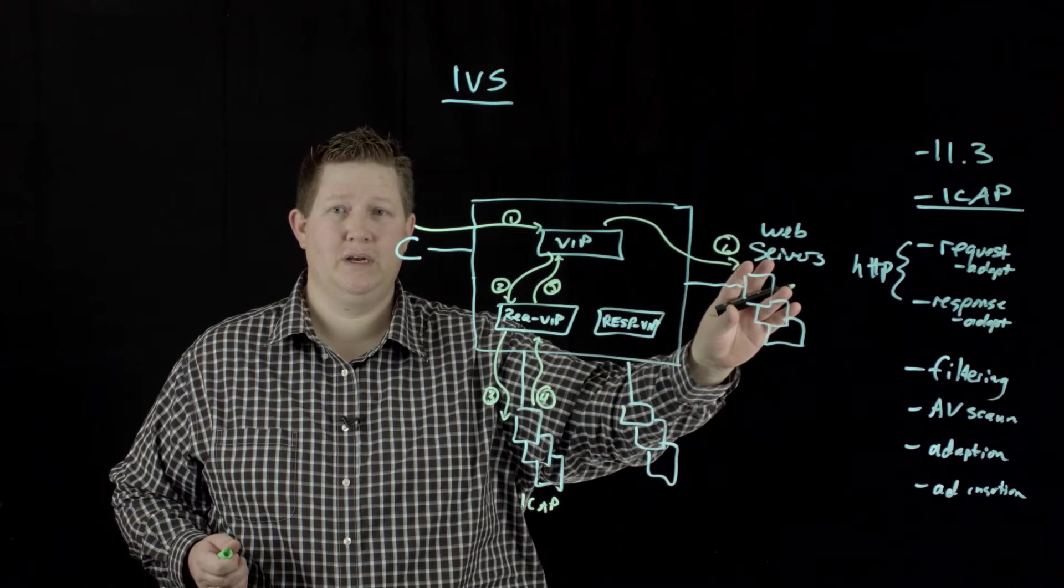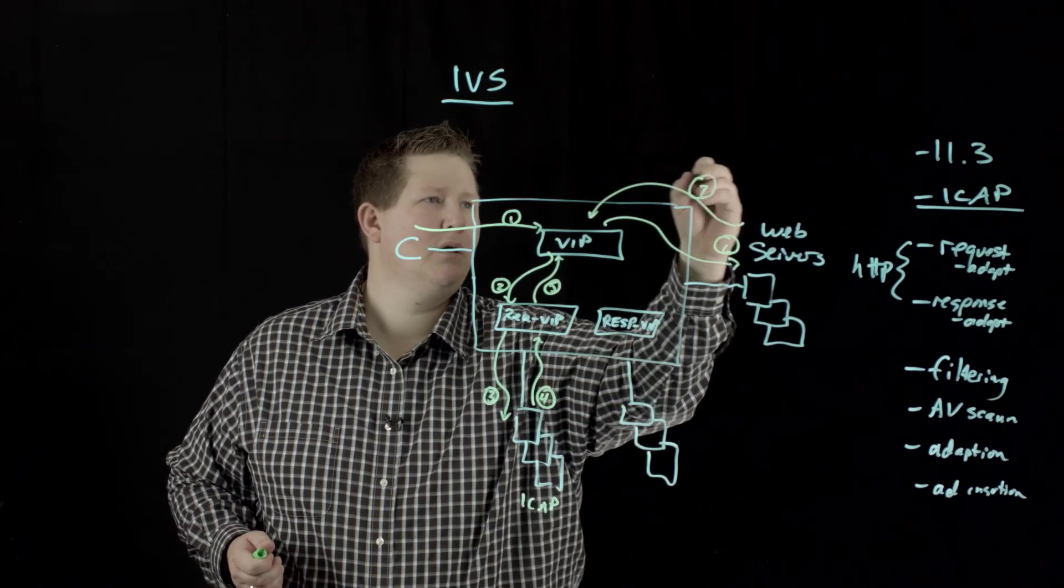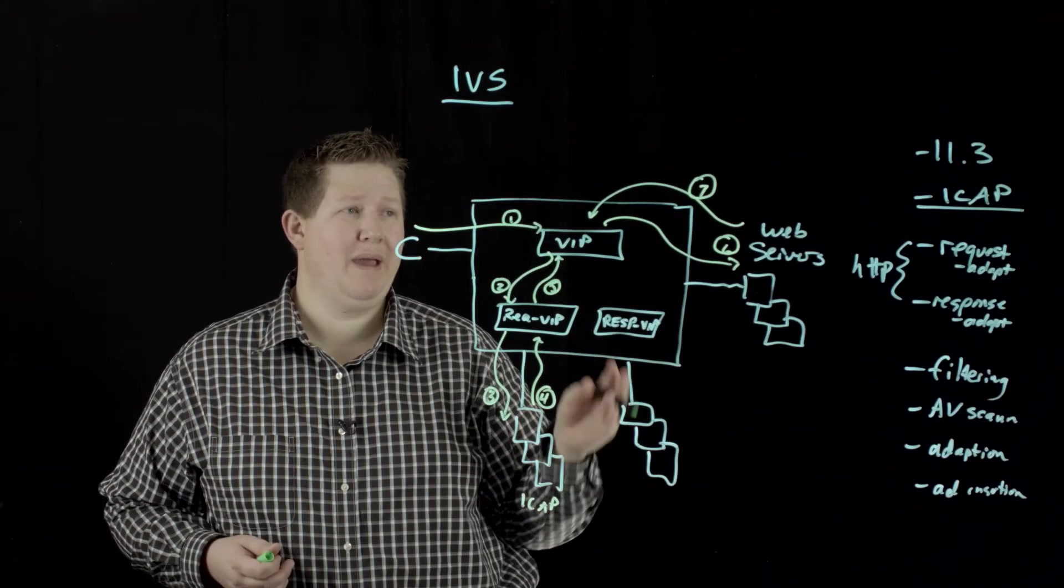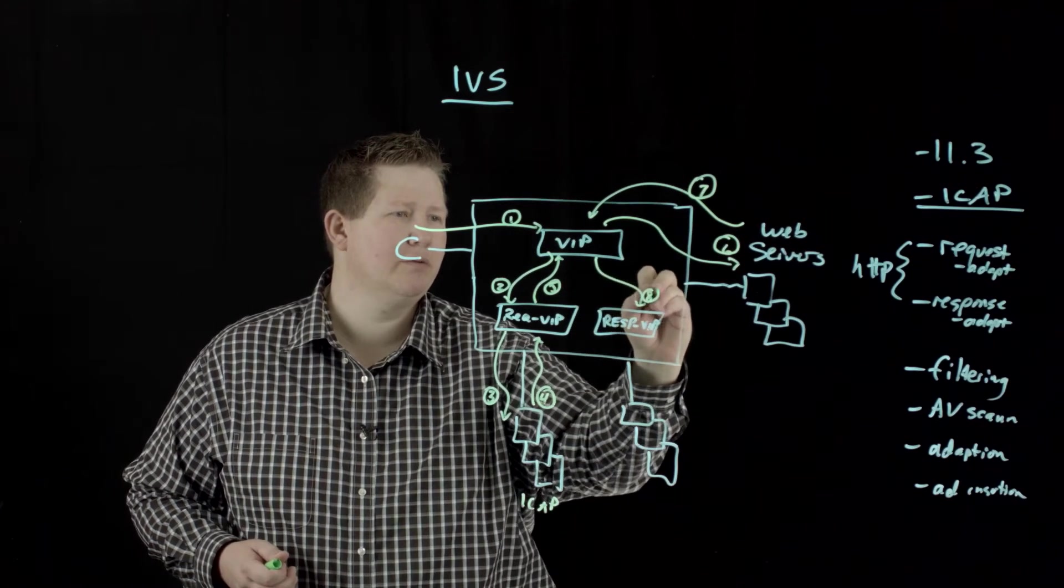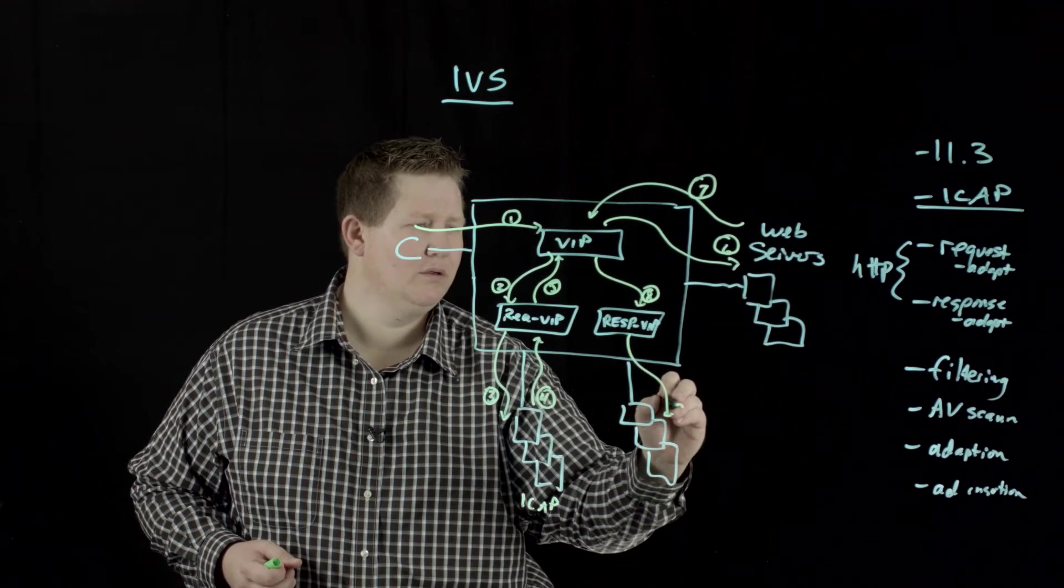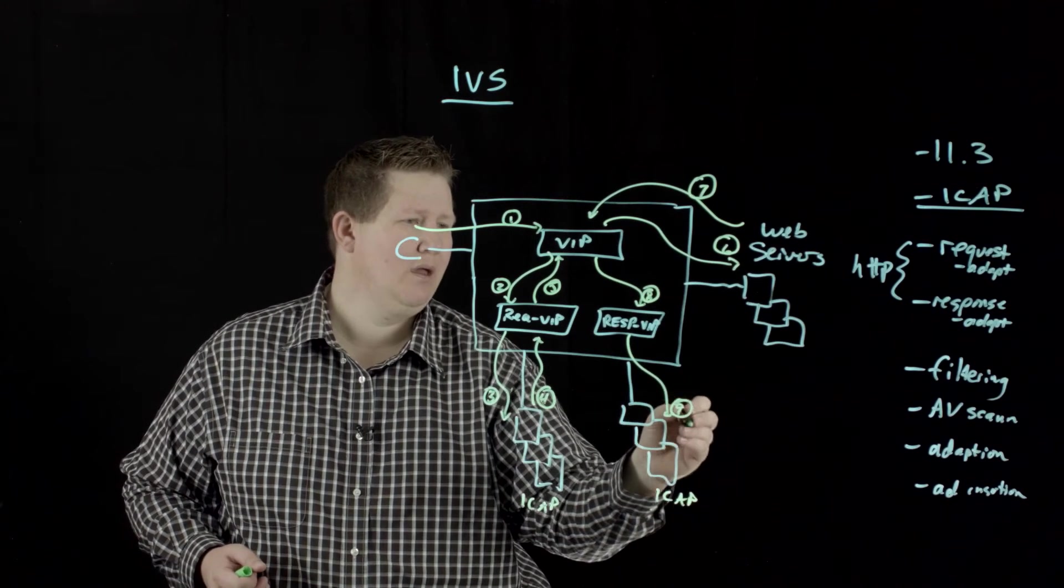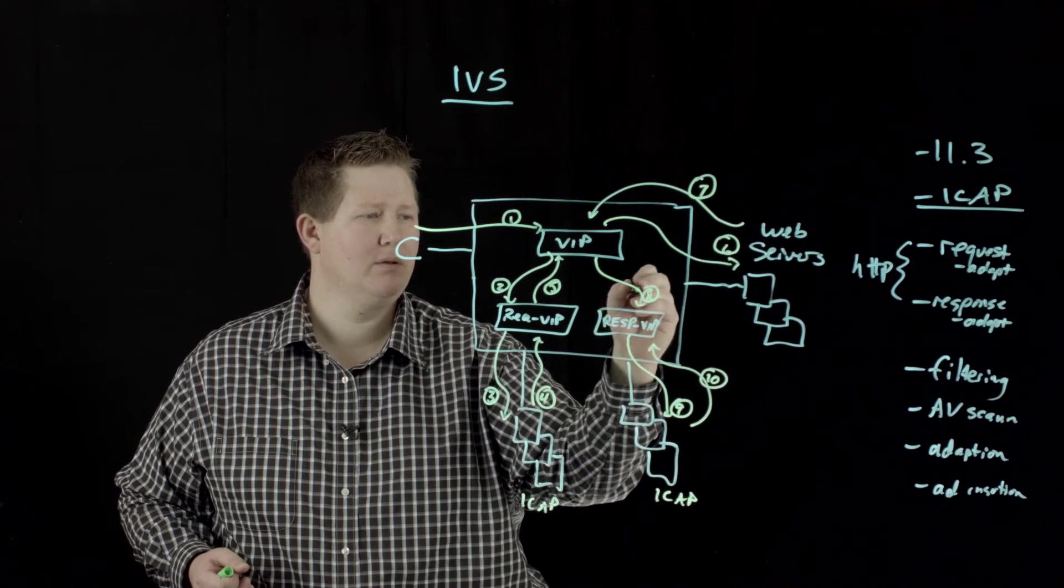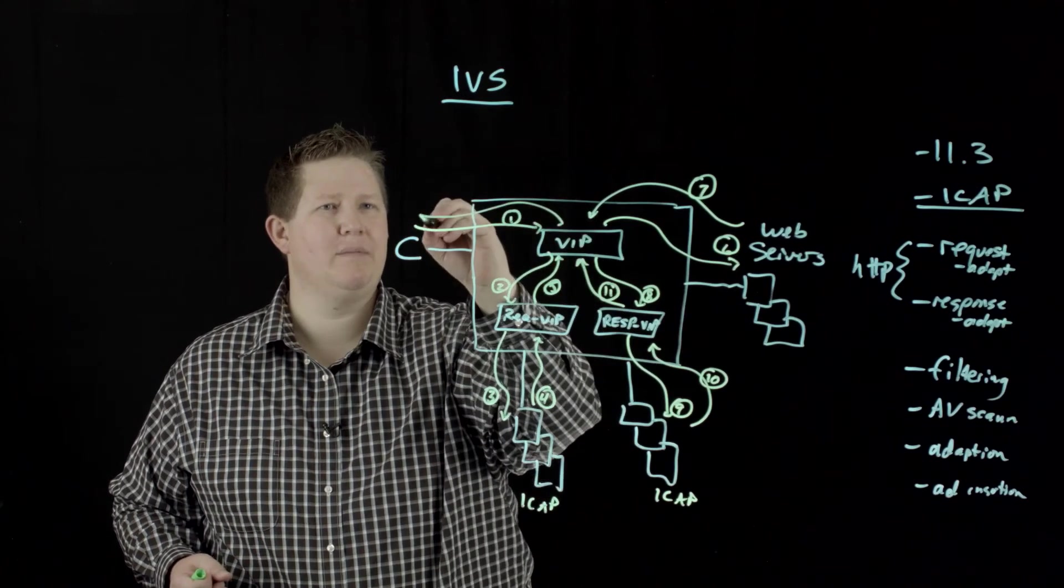The web server does what it needs to do with the request and sends a response. At this point, again, this VIP can just send it back to the client. Or if it's matching a particular pattern coming back from the web server, then it can hand back here to the response VIP, which is internal. Then it'll hand back to these ICAP servers, and it's going to do an ad insertion. So we'll come back up here to the internal VIP, which then will hand off to your primary VIP, and then it'll send that back to the client.